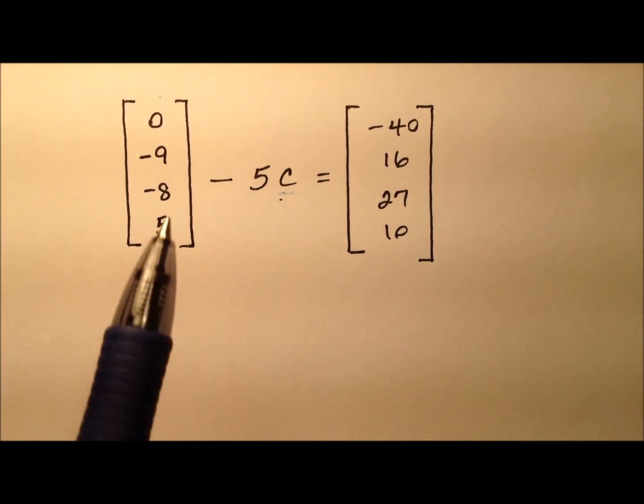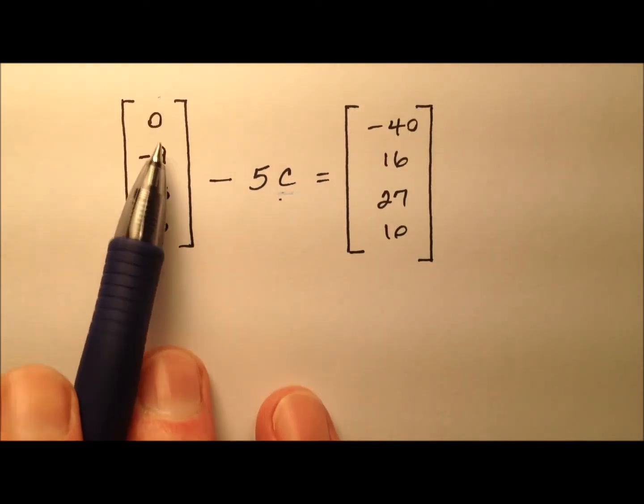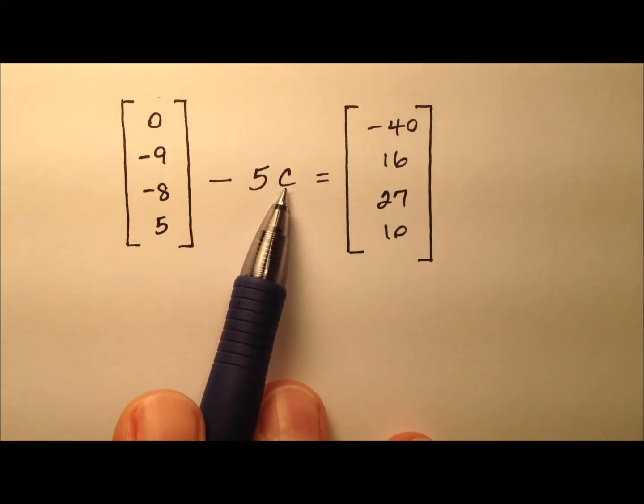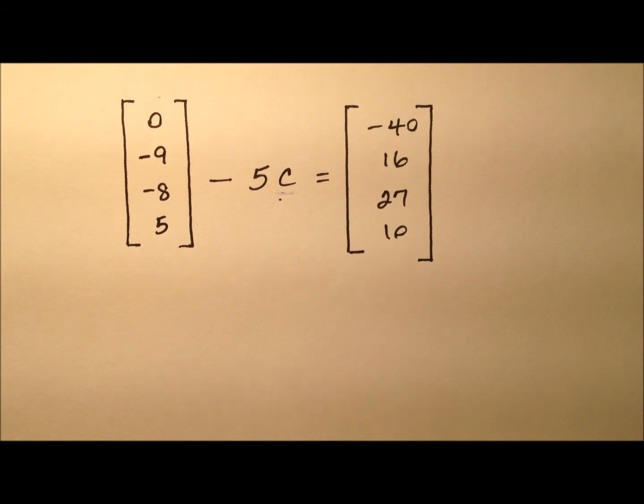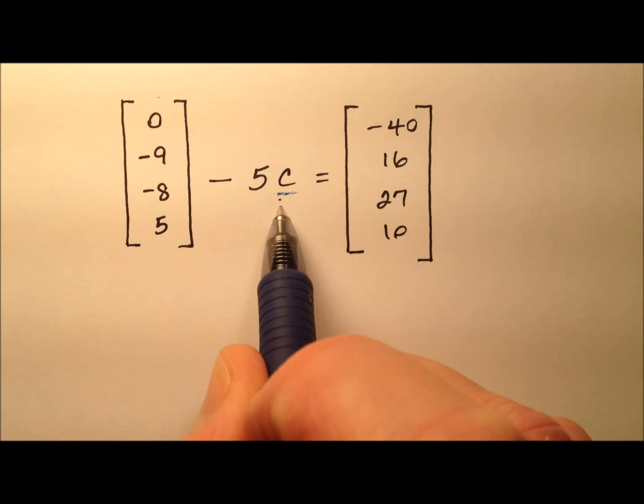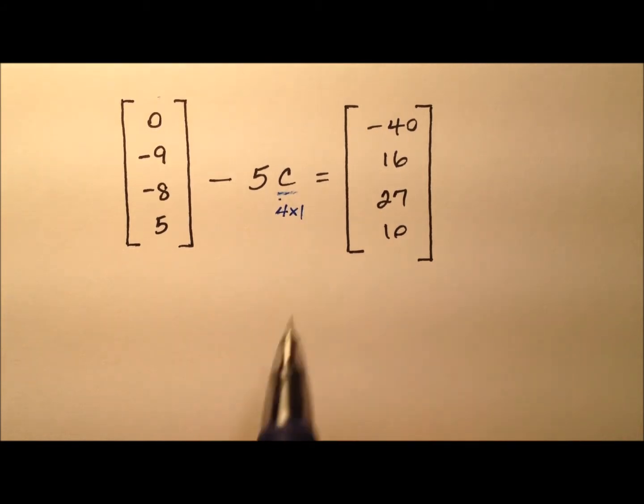Here we are with a couple of column matrices. We have this first one's a 4 by 1, and we're going to subtract 5 times some matrix C and we're going to get another 4 by 1 column matrix. That means that the dimensions for C must also be 4 by 1.